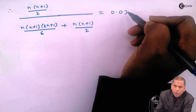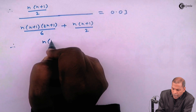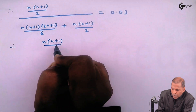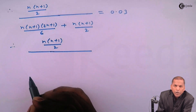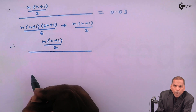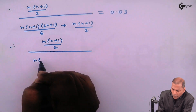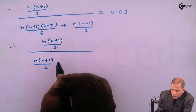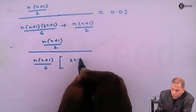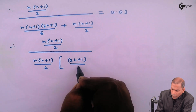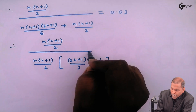Again, in the numerator that n(n+1)/2 we write as it is. From the denominator we take n(n+1)/2 common from both terms, so we have n(n+1)/2 and then in brackets we are left with (2n+1)/3 plus 1.